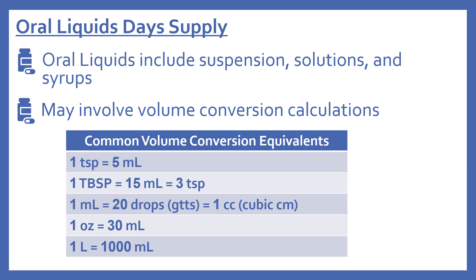Now we'll look at oral liquids day supply, which includes suspensions, solutions, and syrups. This may involve volume conversion calculations. Common volume conversion equivalents: one teaspoon equals five milliliters; one tablespoon equals 15 milliliters, which equals three teaspoons; one milliliter equals 20 drops, which equals one cc; one ounce equals 30 milliliters; and one liter equals 1,000 milliliters.